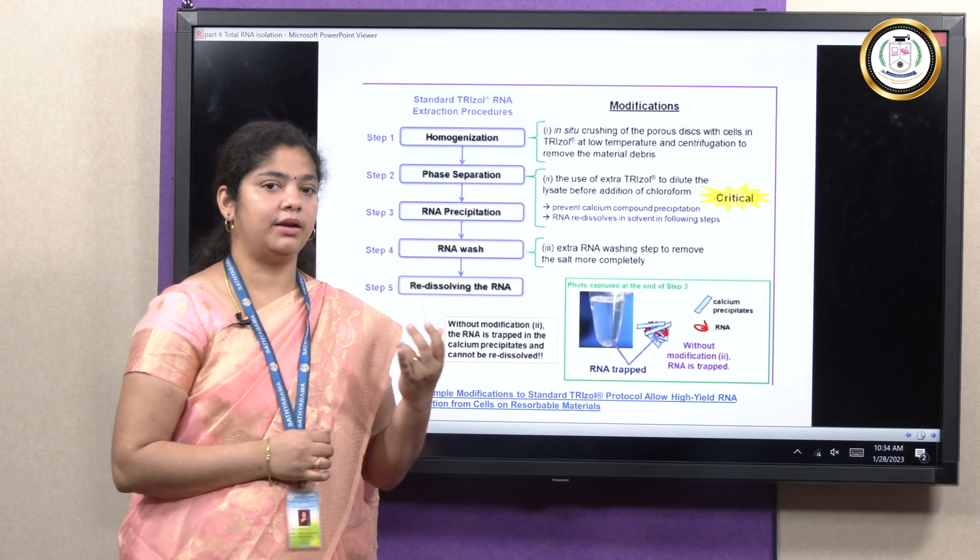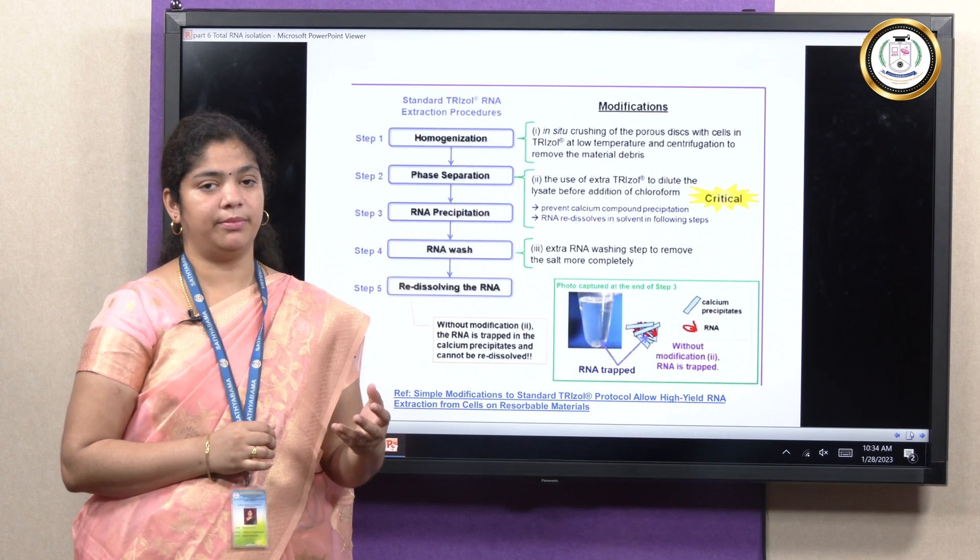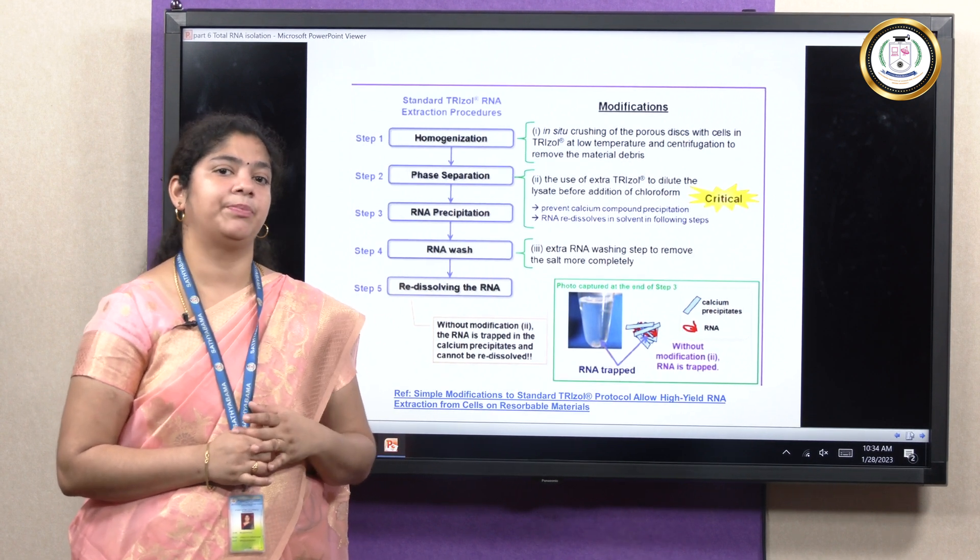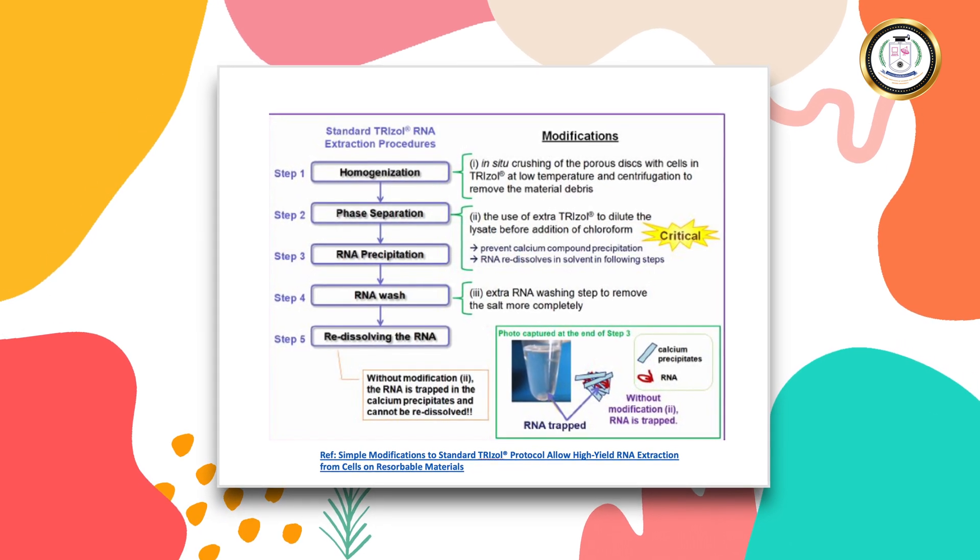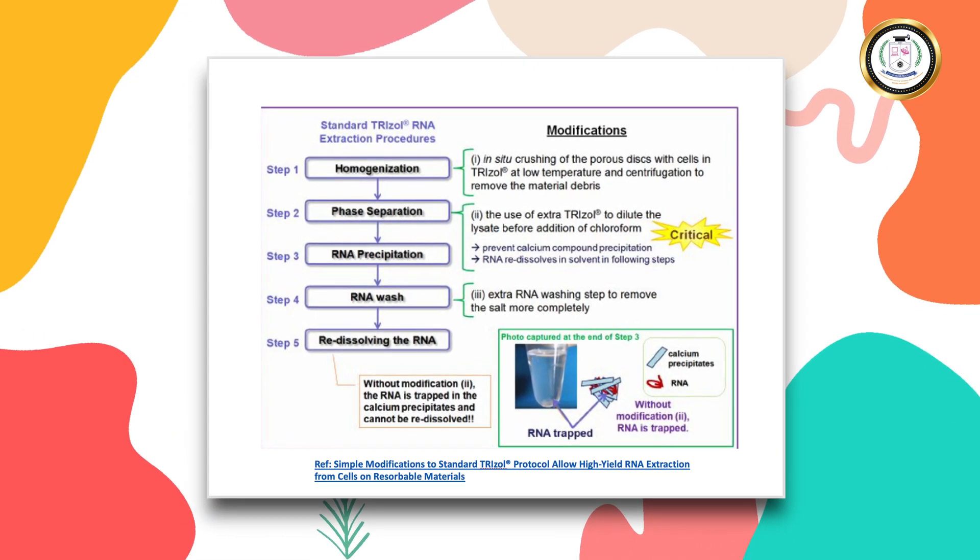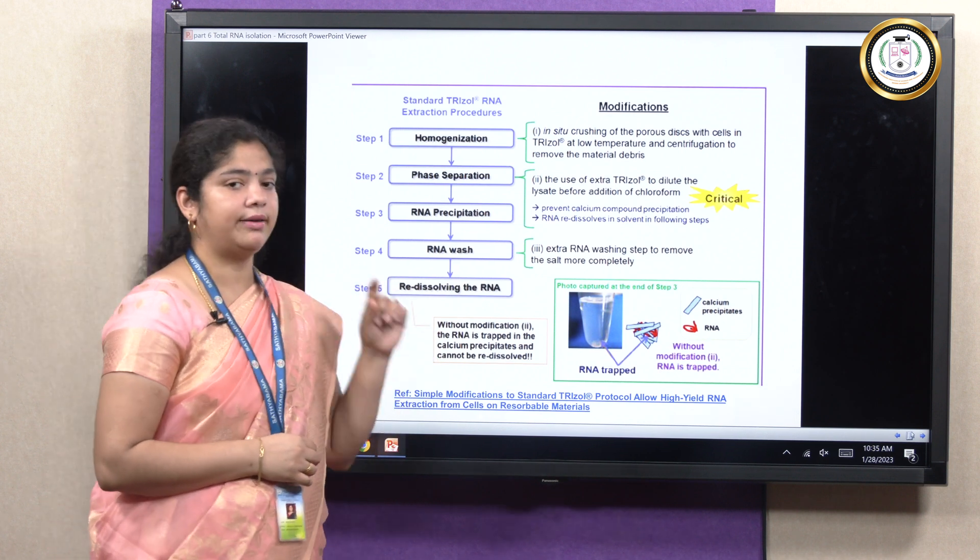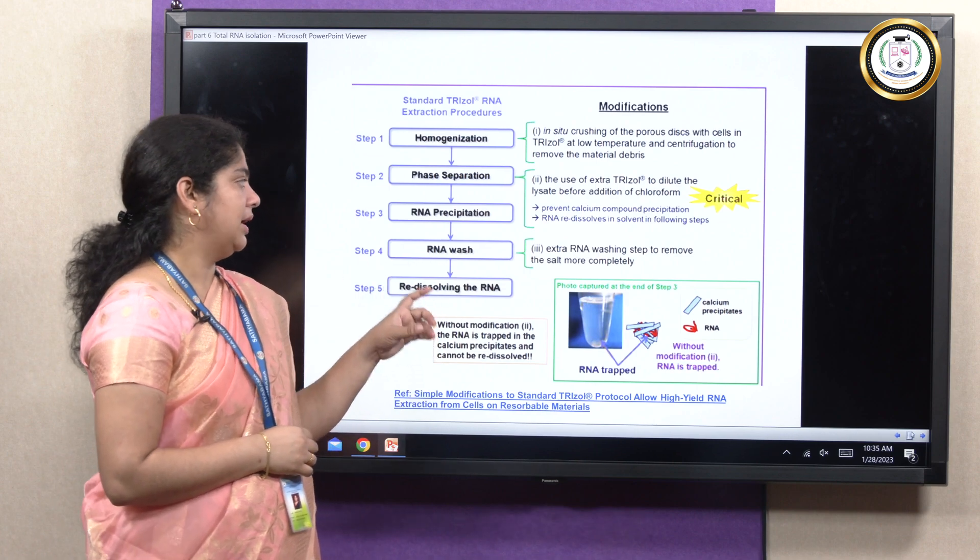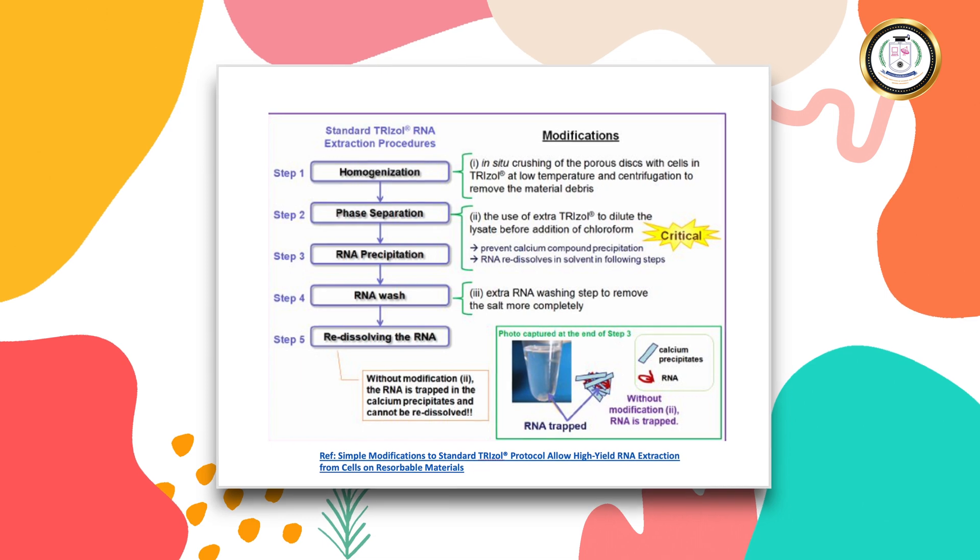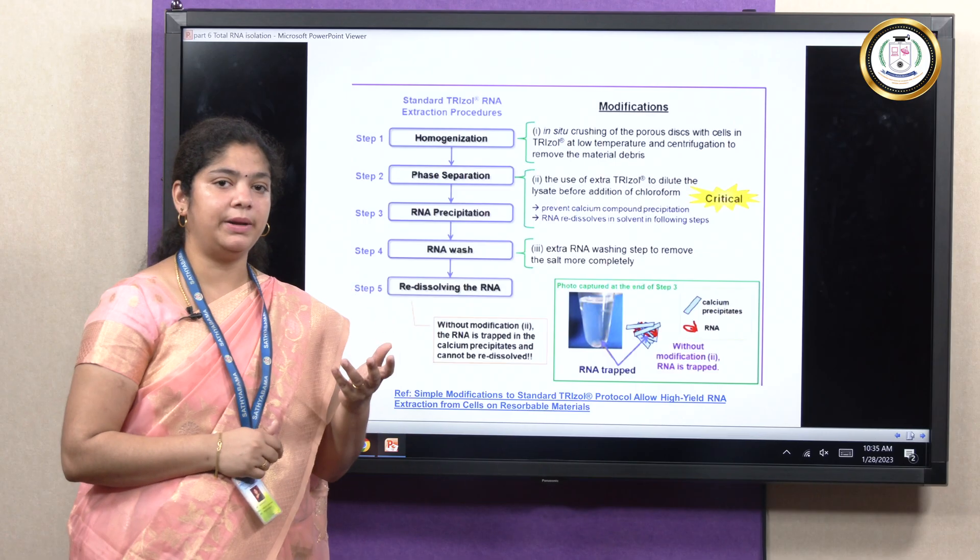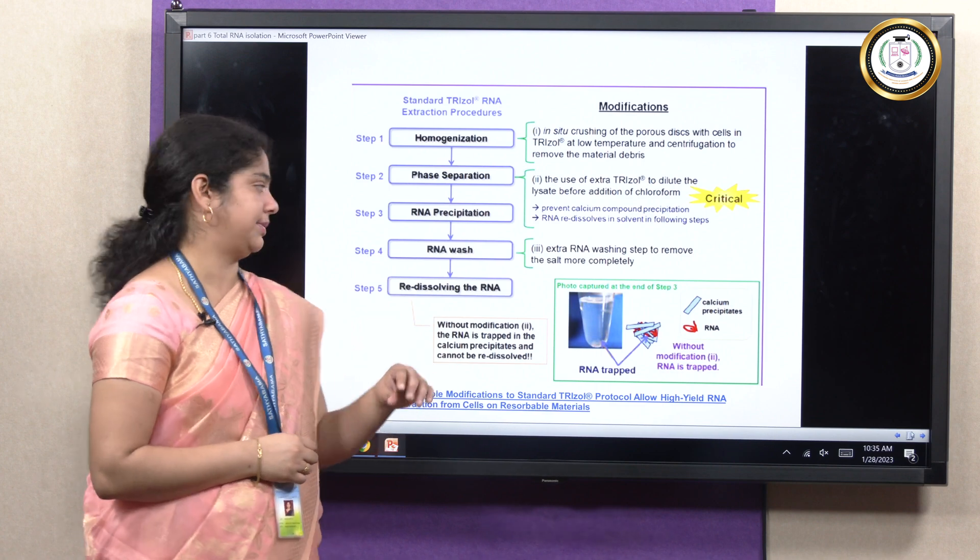And then we can even dilute the trizol suspension to ensure there is a much easier method to isolate RNA. So once we get the trizol suspension, it is brought to room temperature and chloroform is added in the ratio of 2 is to 1. Then when we mix it, we get a two-layer separation. Once the layer is separated, we can even ensure by centrifuging it to obtain a clear surface.